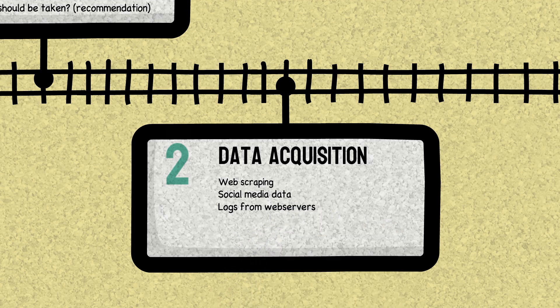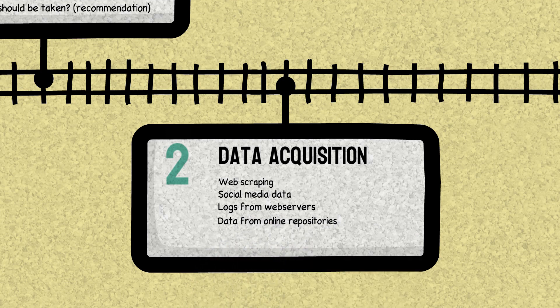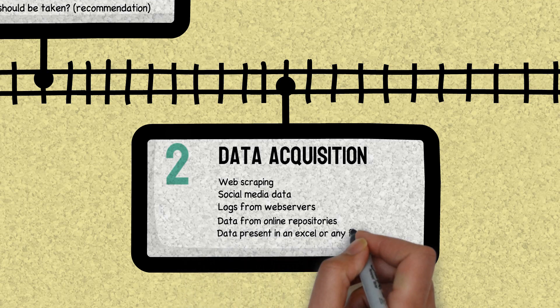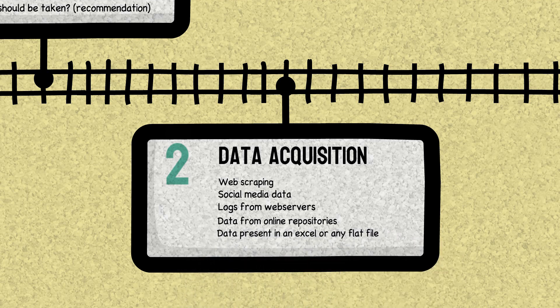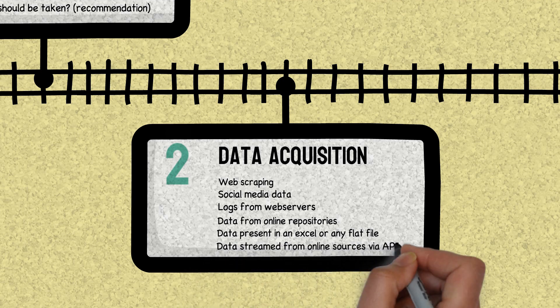Data can also be gathered from the logs of web servers. It may be the server of application, website or anything. Another source of data is repositories. Famous ones are like GitHub. Data from simple Excel file or flat file can also be collected. Data from IoT devices like smart TV, APIs can be gathered.